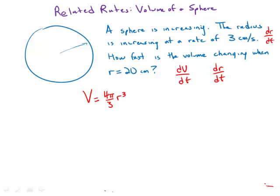So now that we have this formula we'll take a derivative with respect to time. dv/dt equals 4πr² dr/dt.